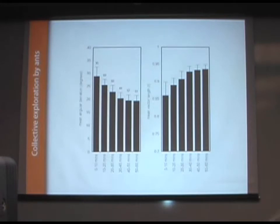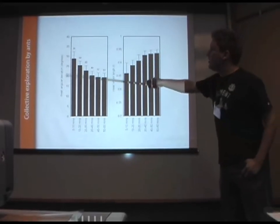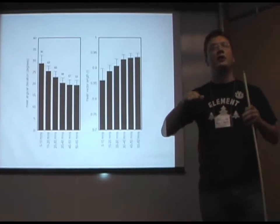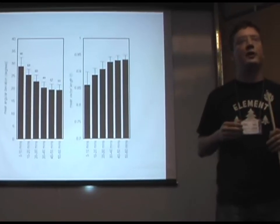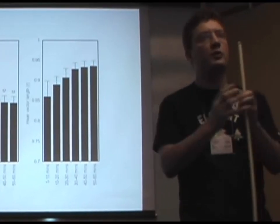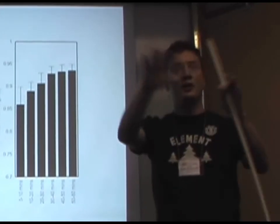But what they will also do is, over time, the mean angular deviation decreases, which shows that the ants will actually have more linear trajectories over time. So when they first search a space, they have this very sort of convoluted walk. They really want to explore every part of that area, collectively.